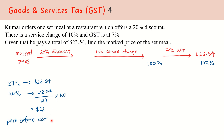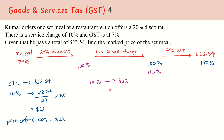So the price before GST is $22.00. Now that we have found the price before GST, we proceed to find the price before the 10% service charge. This $22.00 is actually after the 10% service charge, which is 110%. Going in reverse, 110% represents $22.00, and 100% will be 22 over 110 times 100, giving us $20.00.